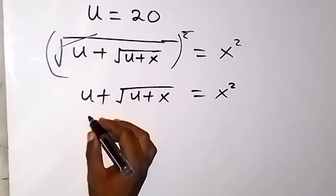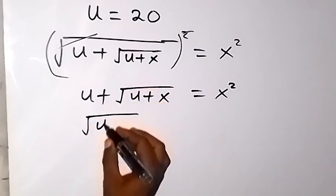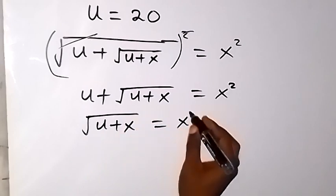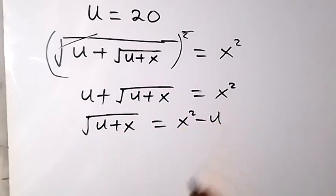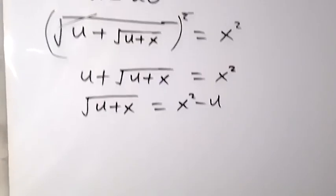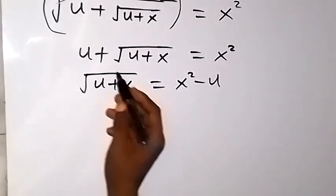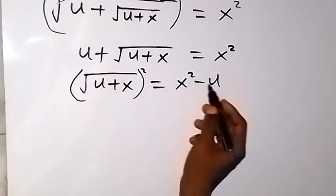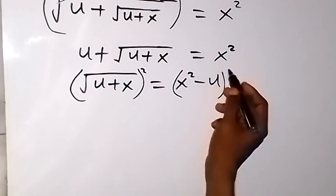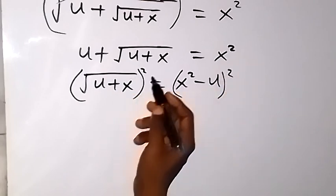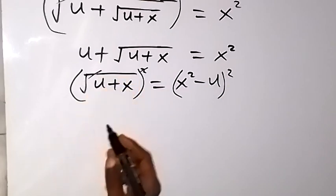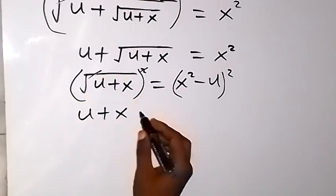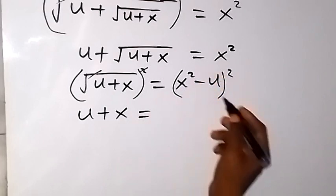From here, let's take u to the other side of the equation. We have root u plus x equals x squared minus u. We can square both sides again to remove the remaining square root, and the square cancels the square root, leaving us with u plus x on the left.